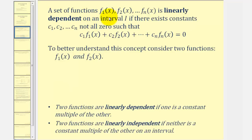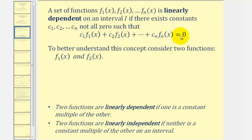A set of functions f₁(x) through fₙ(x) is linearly dependent on an interval I if there exist constants c₁ through cₙ, not all zero, that satisfy this equation. Notice how we have multiples of the functions where the sum is equal to zero.